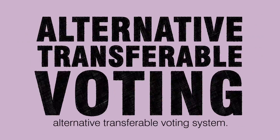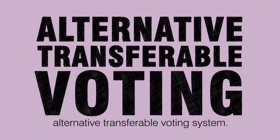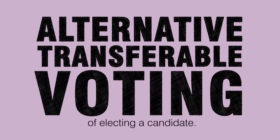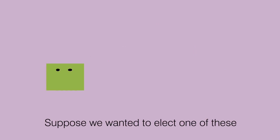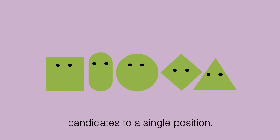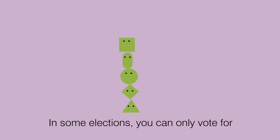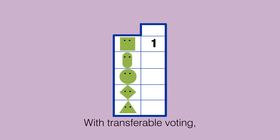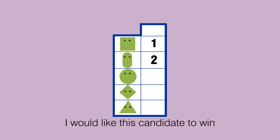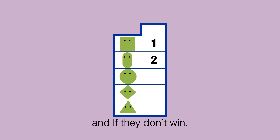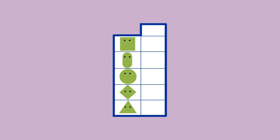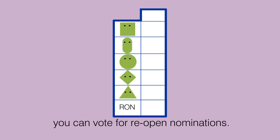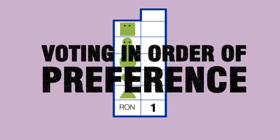For Students Union elections, NUS recommends using the alternative transferable voting system — it is the most fair and effective way of electing a candidate. Suppose we wanted to elect one of these candidates to a single position. In some elections you can only vote for one candidate, but with transferable voting you get the choice of saying: if my favourite candidate doesn't win, I would like this candidate to win, and if they don't win, I would like this candidate to win, and so on. If you don't like any of these candidates you can vote for 'reopen nominations'. This is called voting in order of preference.